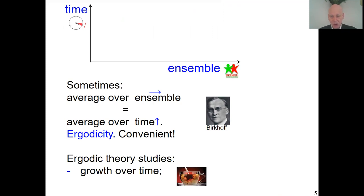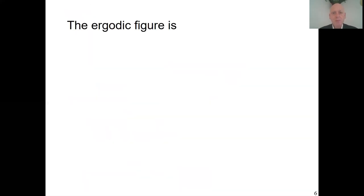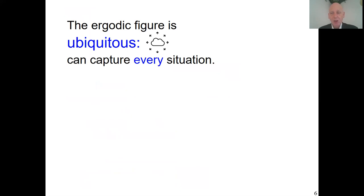Ergodic theory studies this situation. It grows over time and we have to learn from it. For instance, sometimes a transformation of a function can be ergodic — one of the things studied. This ergodic figure I call it ubiquitous. What I mean is every situation can be captured by it. Always we are studying objects and properties; everything progresses in time.